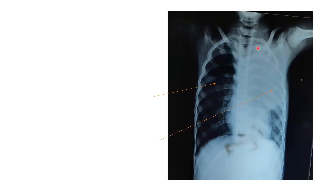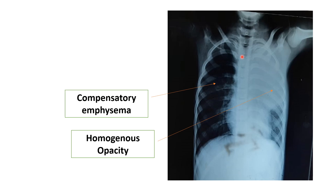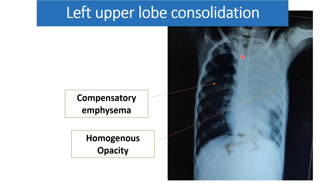In this x-ray, a homogeneous opacity is present in the left upper zone, with compensatory emphysema — the lung is inflated with increased bronchovascular markings. The trachea is in the central position. The diagnosis is left upper lobe consolidation. Another finding in this x-ray: you are not able to differentiate the left upper heart border from the lung field — this is the silhouette sign, seen whenever a cardiac border is obscured by any intrathoracic lesion.